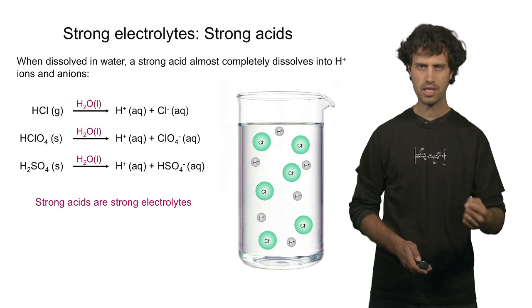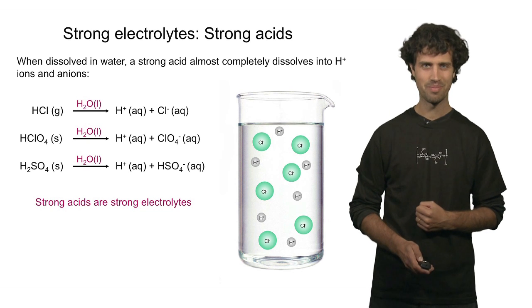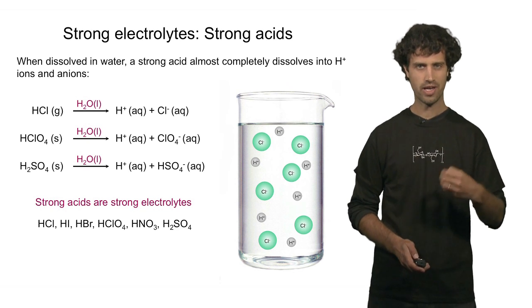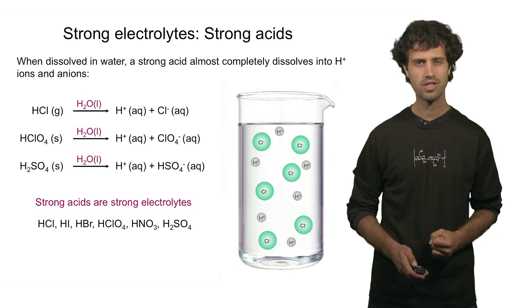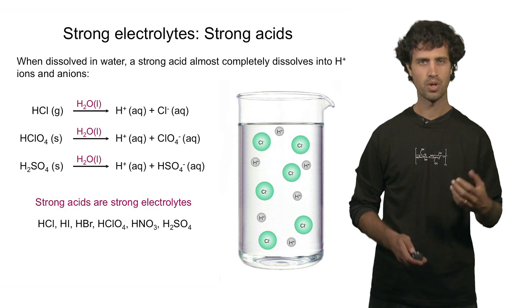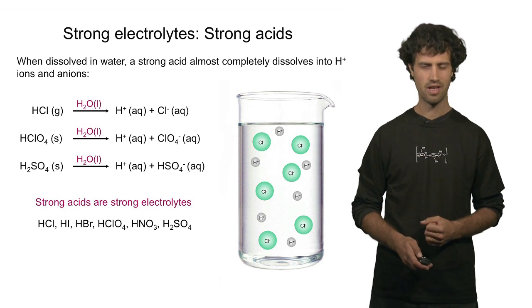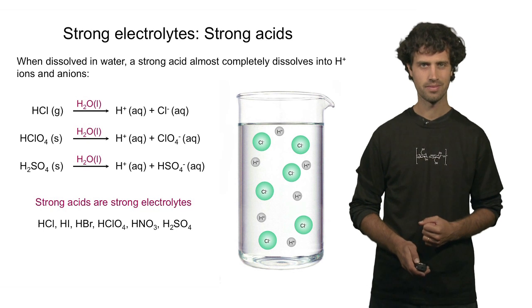There are six such strong acids, and you should remember them. They are hydrochloric acid, hydroiodic acid, hydrobromic acid, perchloric acid, nitric acid, and sulfuric acid.